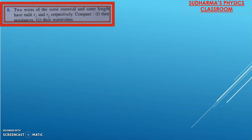This is one of the most important types of questions from the specific resistance concept. Two wires of the same material and same length have radii r₁ and r₂ respectively. Compare their resistances and resistivities. Since they are the same material, ρ₁ = ρ₂ = ρ. And since they have the same length, L₁ = L₂ = L, but their radii are different.